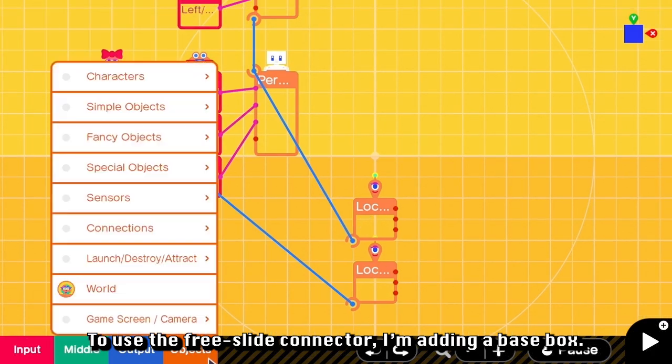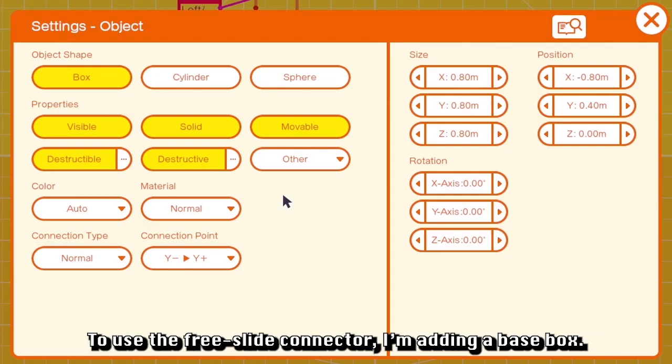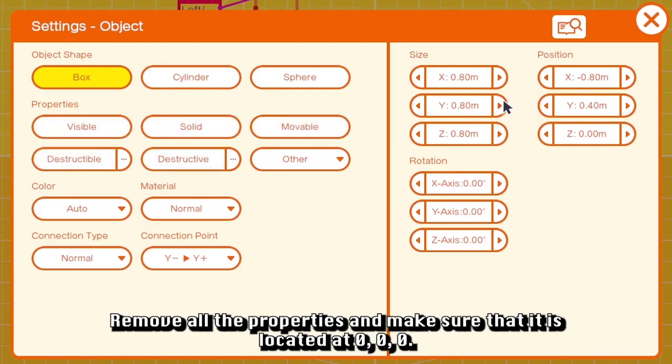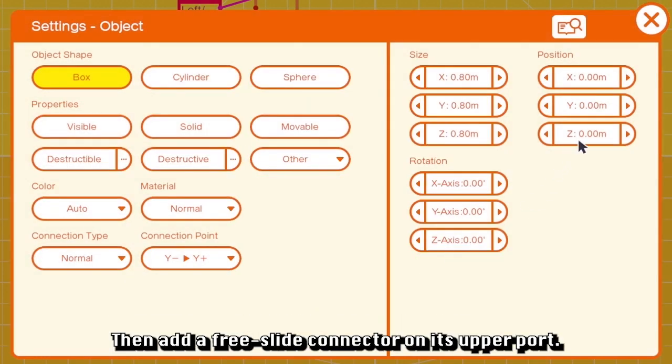And to use the free slide connector, I'm adding a base box. Remove all the properties and make sure that it is located at 0 0 0 or the origin.